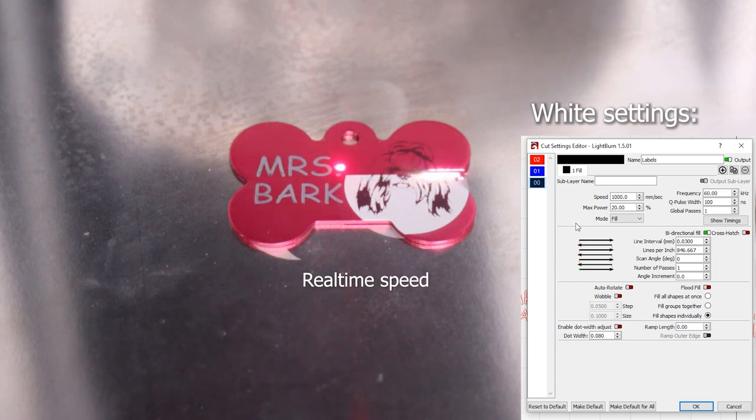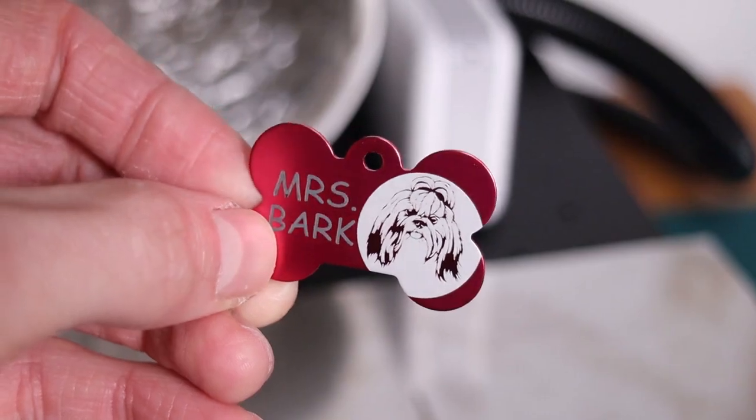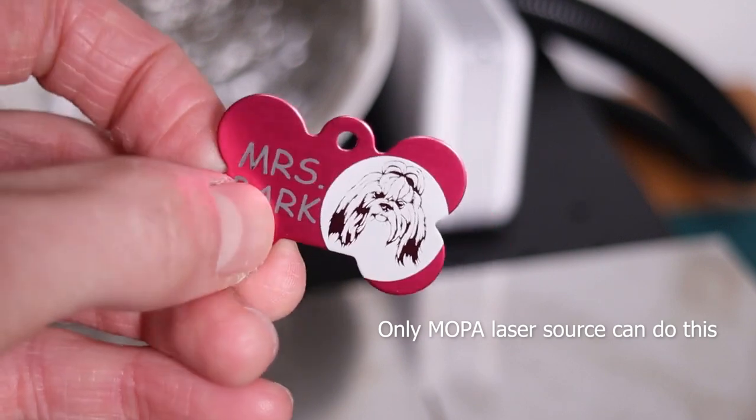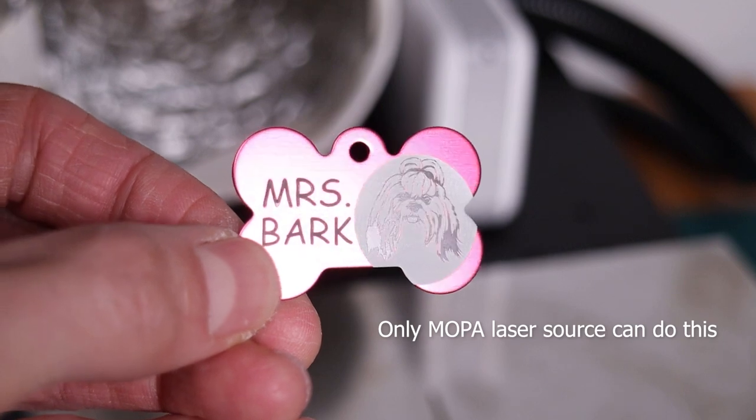White engravings, on the other hand, remove the oxide layer, producing a deep engraving. It is amazing that we can produce different colors on the same material. Darker colors are smooth and shiny, while white has some texture to it.